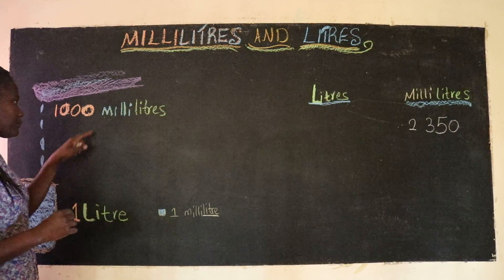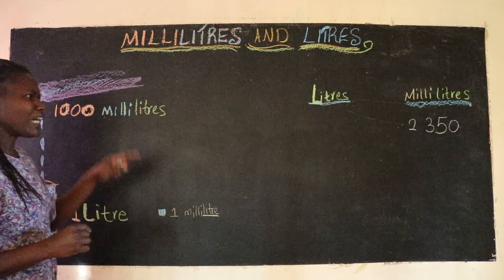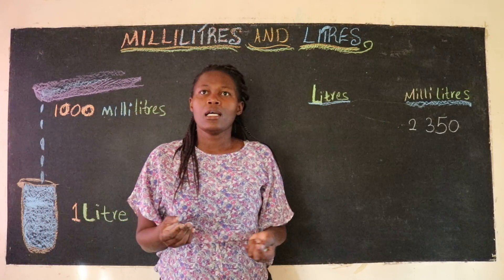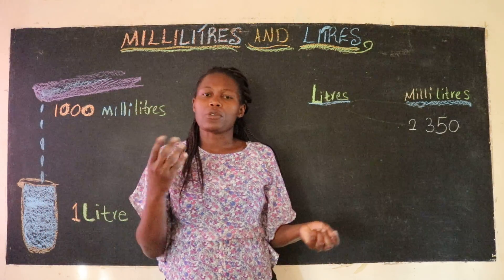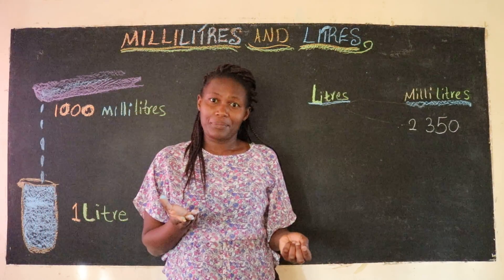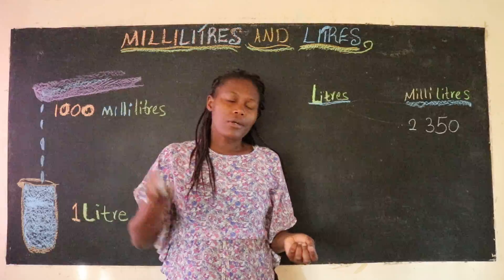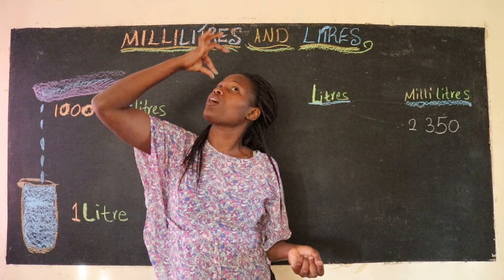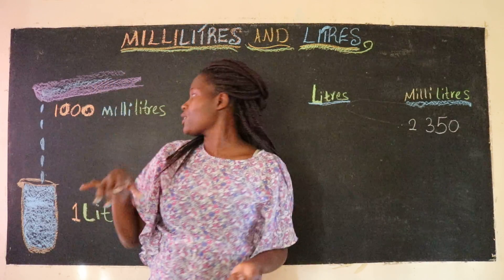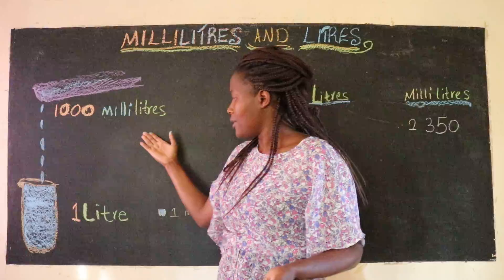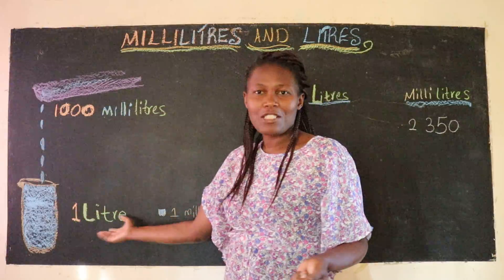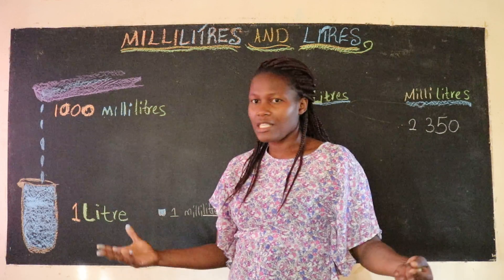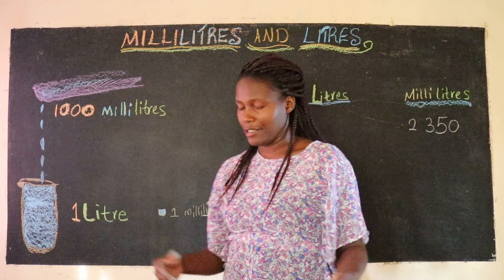A tiny milliliter is also important because it could be used in medicine — like when you have ear drops or eye drops. Liters you could use for milk and juices and all the others.